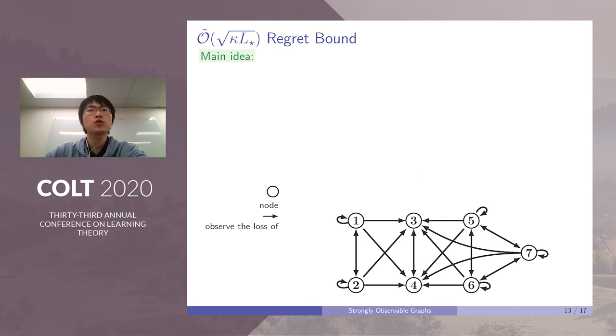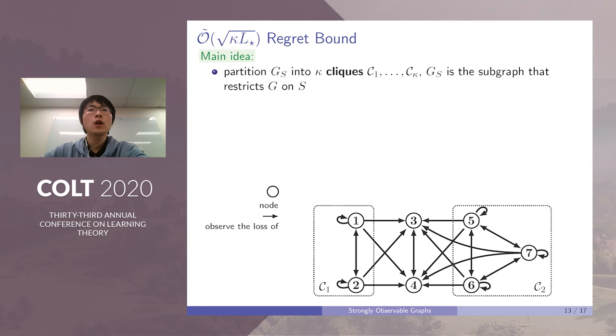To illustrate how to further improve the dependence on the cardinality of S to the clique partition number κ, we use the following graph as an example. This is surely a strongly observable graph with nodes 1, 2, 5, 6, and 7 having a self-loop, and 3 and 4 that can be observed by all the other nodes. We first partition the nodes with self-loops into κ cliques. In this example, we have two cliques. The first clique contains nodes 1 and 2, and the second clique contains nodes 5, 6, and 7.